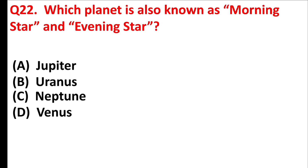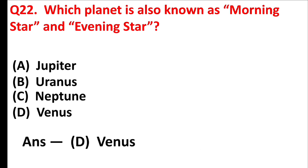Which planet is also known as the Morning Star and Evening Star? Answer is Option D: Venus.